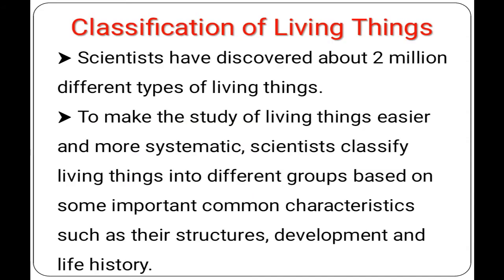The classification of living things. Scientists have discovered about two million different types of living things. There may be many more which have not been discovered. To make the study of living things easier and more systematic, scientists classify living things into different groups based on some important common characteristics such as their structures, development and life history. Studying two million different types of living things one by one is not possible.